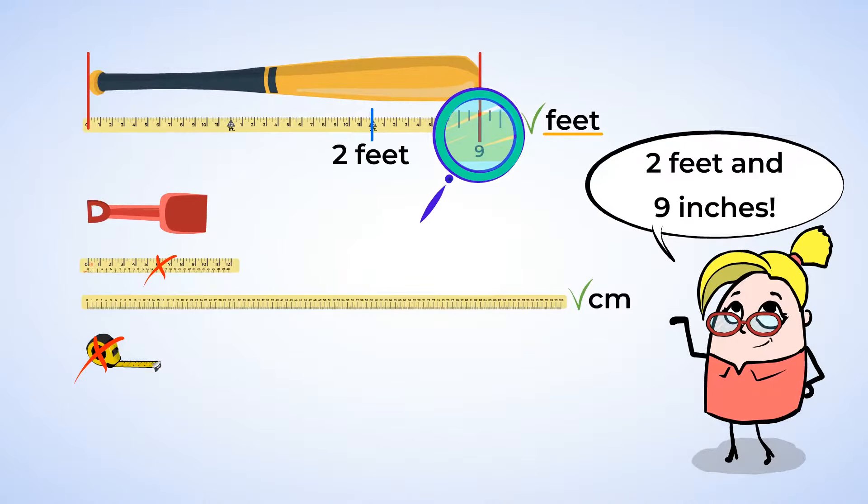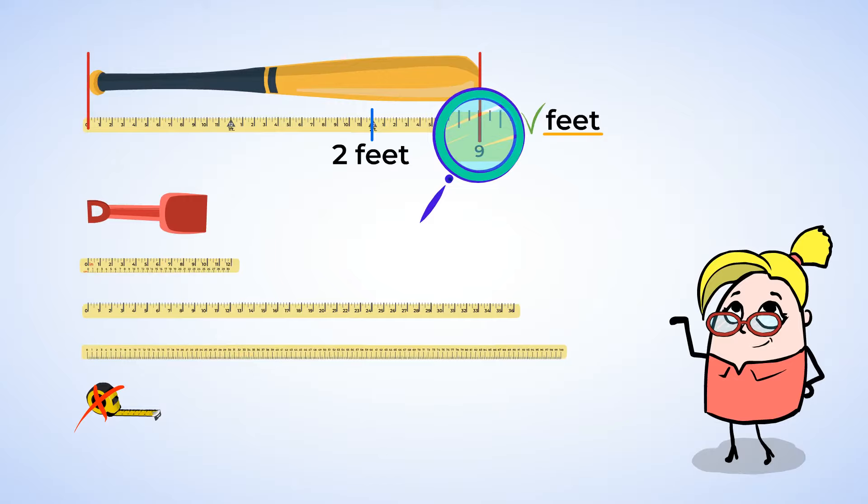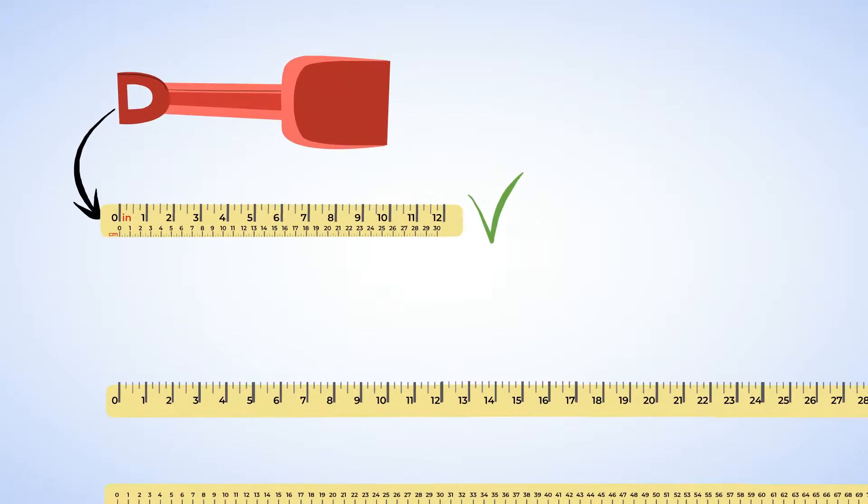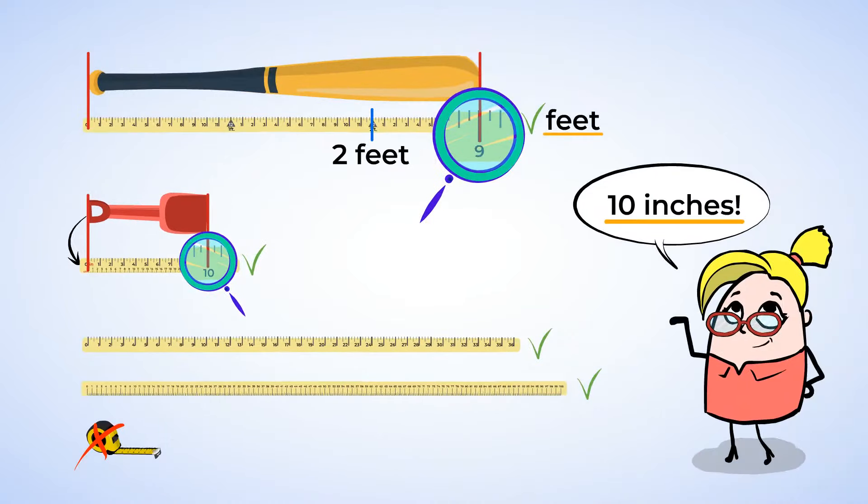And that leaves us the toy shovel now. The toy shovel is a bit short, so we might be able to use any of these three tools. And sometimes an object can be easy to measure with more than one tool. But let's see if we can use the ruler. Okay, this works. We have the shovel aligned with one edge of the ruler. And now we can read the other side. And it looks like the toy shovel is 10 inches. Yeah, good job!